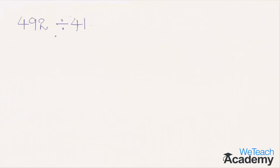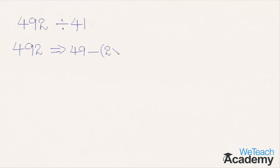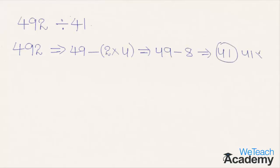Coming to the first example: 492 divided by 41. According to the concept, we subtract 4 times the last digit from the remaining number. We can write this as 49 minus 4 times the last digit 2, giving us 49 minus 8, which is equal to 41. Since 41 is divisible by 41 — that is, 41 times 1 — the number is divisible by 41.